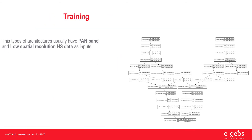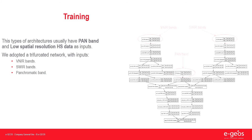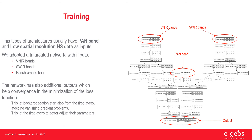These types of architectures usually have the panchromatic band and low spatial resolution hyperspectral data as inputs. We adopted a trifurcated network with three inputs: VNIR bands, SWIR bands, and the panchromatic band. The network also has additional outputs which help convergence in the minimization of the loss function. So, we don't have only the hypersharpened output, but also additional outputs which serve two main functions: they let back-propagation start also from the first layer, hence avoiding vanishing gradient problems, and this makes it possible to better adjust the parameters of the first layers.